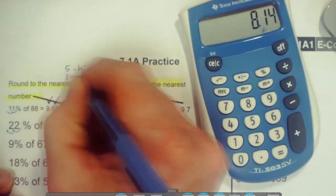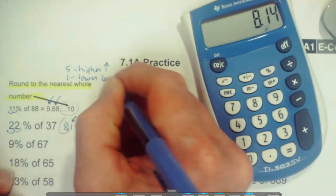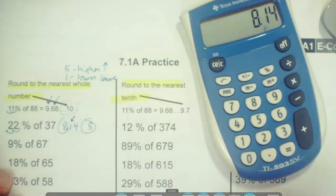because if it's 1 or below, we just leave it alone. So this is just going to be 8, rounding to the nearest whole number on that one.